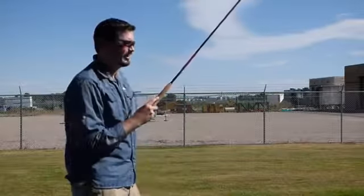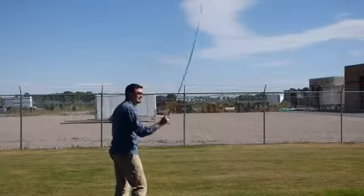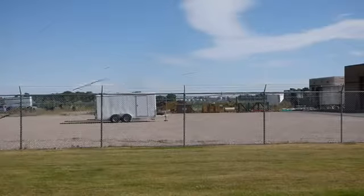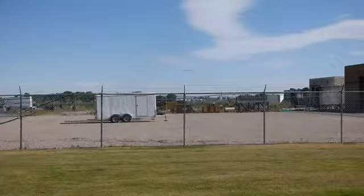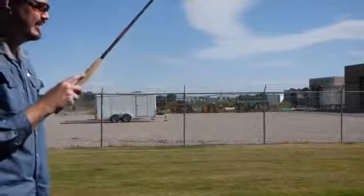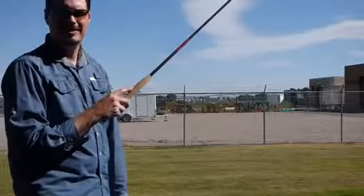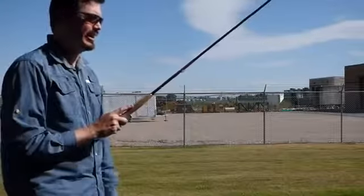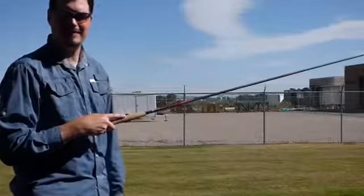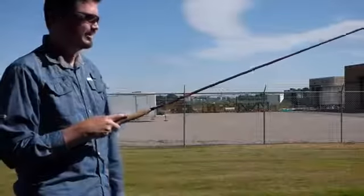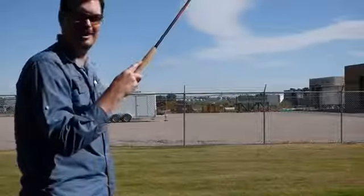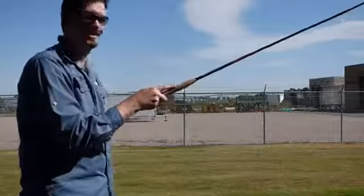Now if you're having some problems with all the line piling all together in front of you, it's either you're not getting enough energy or you're bringing the rod too low. You want to stop high so it can shoot that line all the way out. If you bring it down low, you're just pile driving it into the water all together. Make sure you get that stop and don't go all the way flat like you would with a normal fly rod. Stop high, let it shoot out.